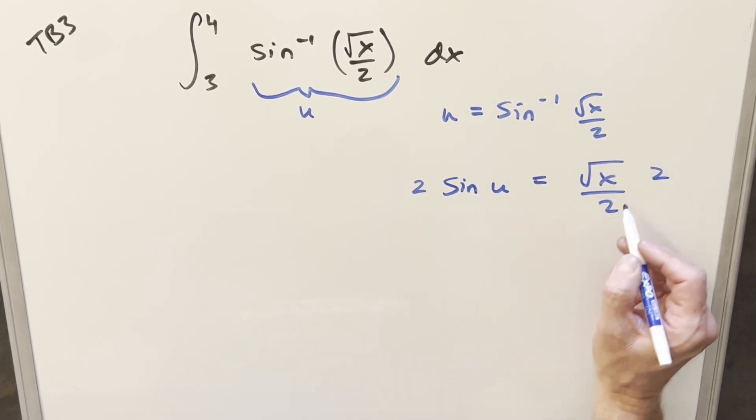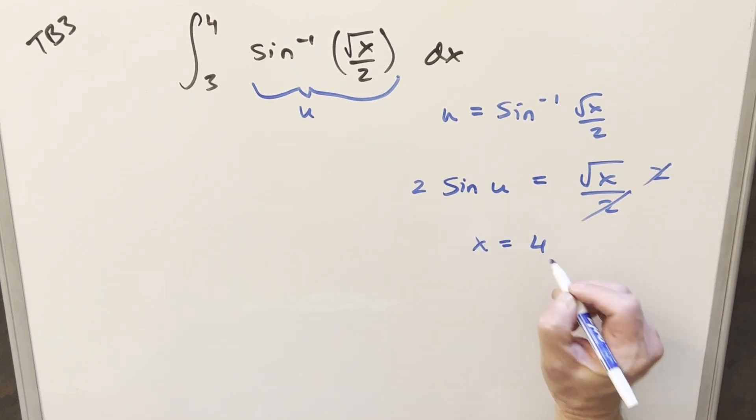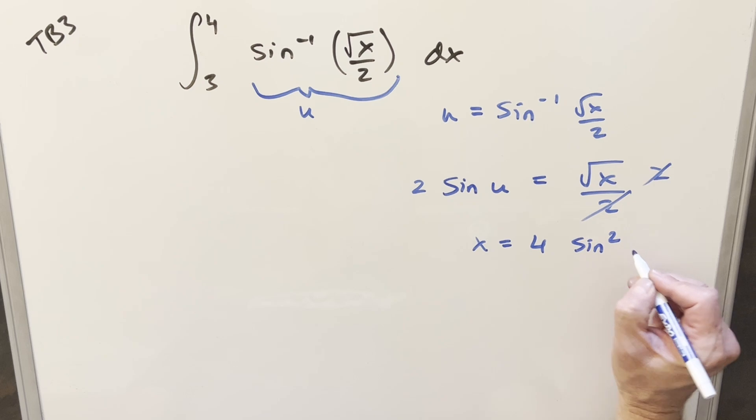Multiply by two on both sides. That's going to cancel there. Then square it, we have a value for x. x is going to be four sine squared of u.